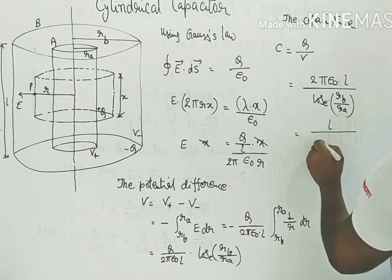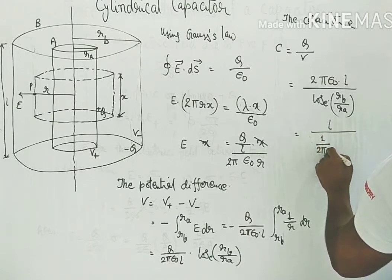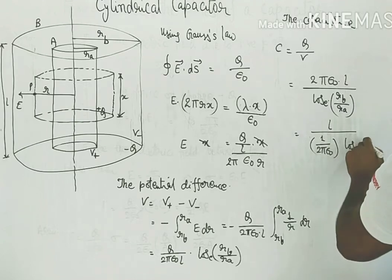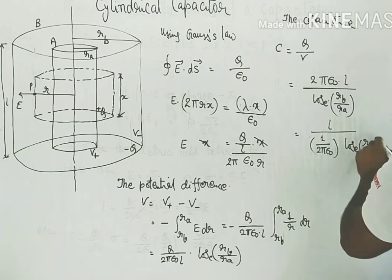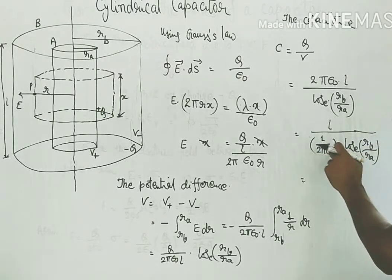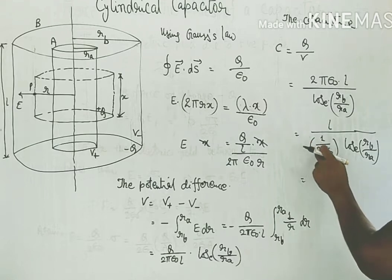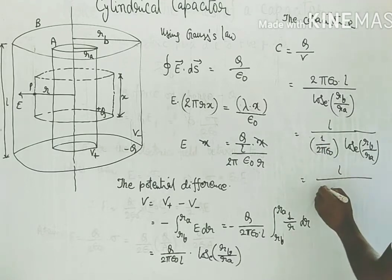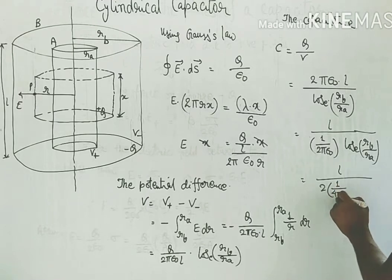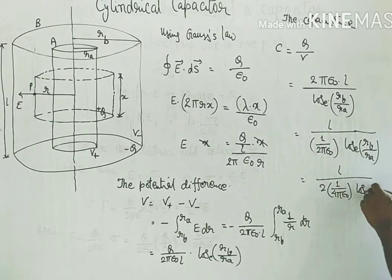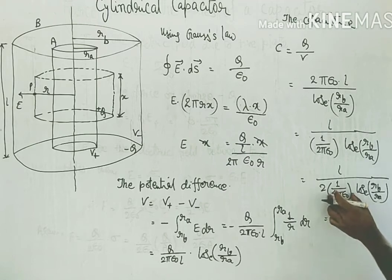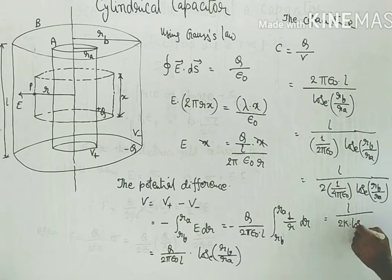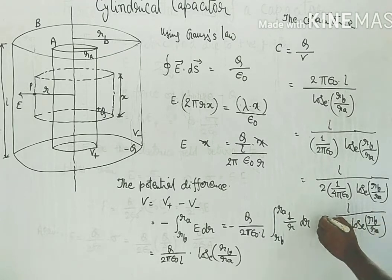This can further be written as l upon 1 upon 2 pi epsilon naught into log base e of R_B upon R_A. Multiplying and dividing by 2 to introduce the factor 1 upon 4 pi epsilon naught, we have l upon 2 into 1 upon 4 pi epsilon naught into log base e of R_B upon R_A, which equals l upon 2k into log base e of R_B upon R_A, where k equals 1 upon 4 pi epsilon naught. This was the formula I wrote yesterday.